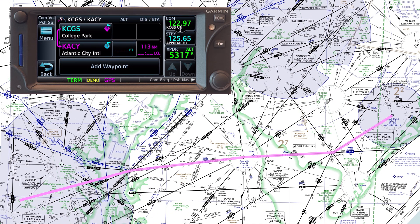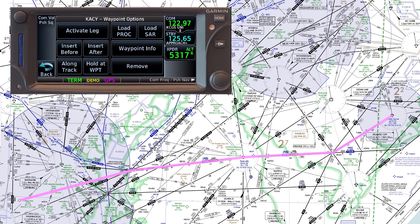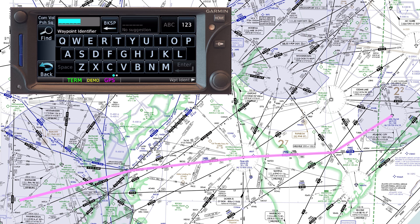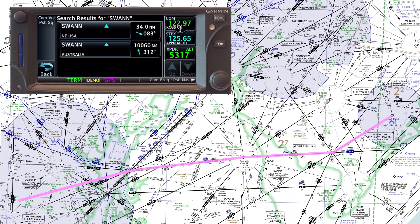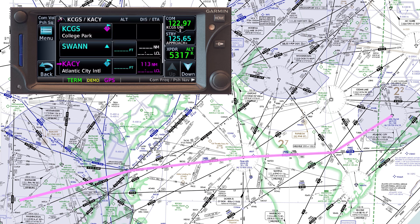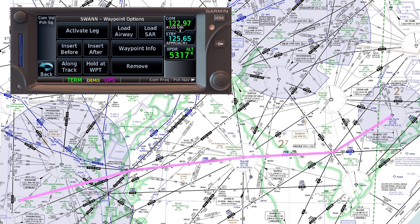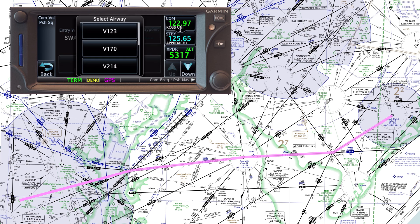We'll hit flight plan again and tap the destination KACY. We'll hit insert before to add a waypoint before Atlantic City and enter Swan. Obviously we'll choose the Swan intersection here in the US, not in Australia. Now for the airway we'll hit Swan and there's an option to load airway. These are all the airways that Swan is a part of.